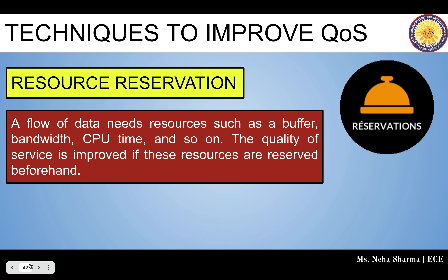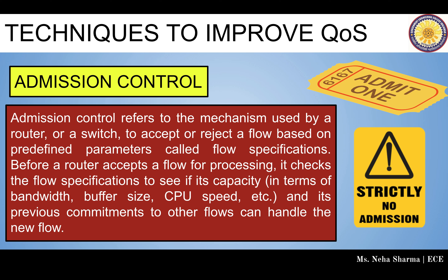Next is resource reservation. The flow of data needs resources such as buffer, bandwidth, CPU time, and others. Quality of service is improved if these resources are reserved beforehand. The fourth technique is admission control. Admission control refers to the mechanism used by a router or switch to accept or reject a flow based on predefined parameters called flow specifications. Before a router accepts a flow for processing, it checks the flow specification — bandwidth, buffer size, CPU speed, and previous commitments to other flows — to determine if it can handle the new flow.